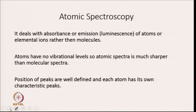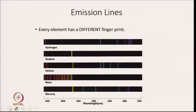As the name suggests, atomic spectroscopy deals with absorbance or emission of atoms or elemental ions rather than molecules. Since atoms have no vibrational levels, atomic spectra are generally much sharper than molecular spectra. Positions of peaks are well defined and each atom has its own characteristic peak — that is the main advantage of atomic spectroscopy. The emission lines of different elements are peculiar to that element only, and hence every element has a different fingerprint.